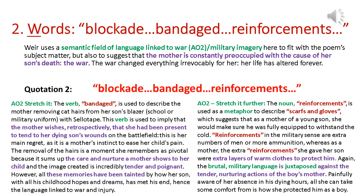Moving on to the words Jane Weir uses: we can see blockade, bandaged, and reinforcements. Weir uses a semantic field of language linked to war — quite military language — which obviously fits the poem's subject matter, but it also suggests the mother is constantly preoccupied with the cause of her son's death. Everything about her existence is tinged with these memories of war, reflected in her use of language, so her life has changed forever. The verb bandaged is used to describe the mother removing cat hairs from her son's blazer — either his school blazer or part of his military uniform.